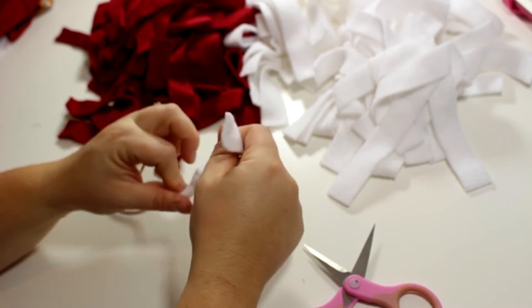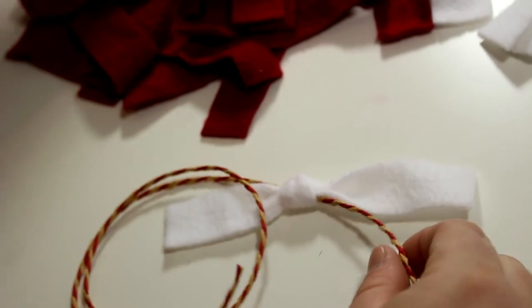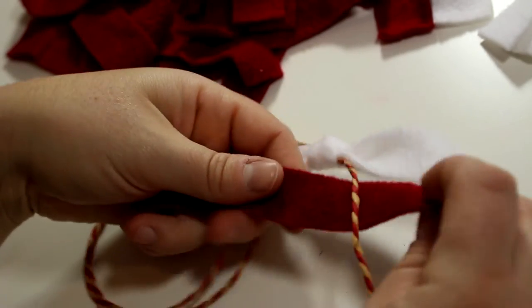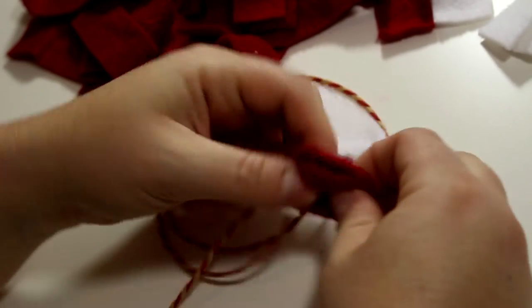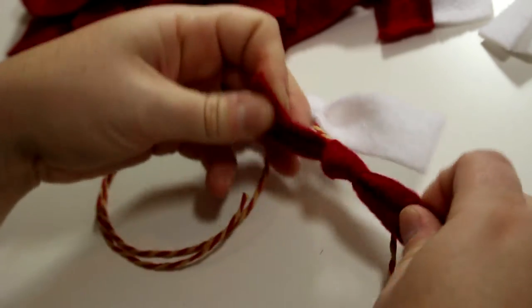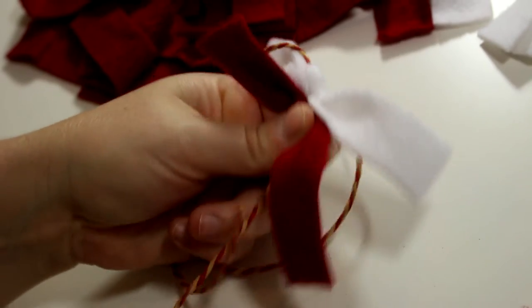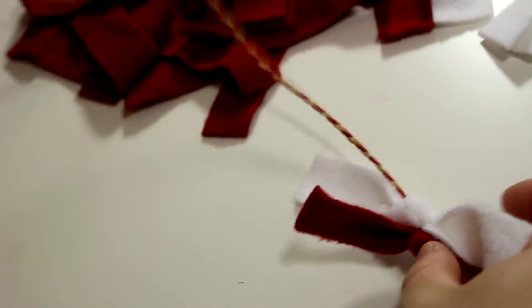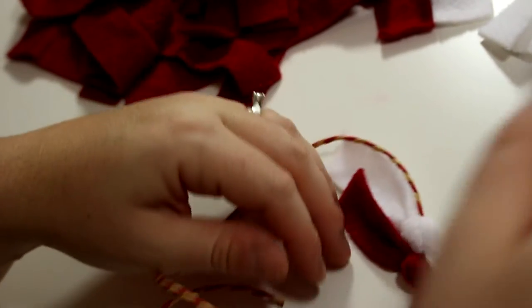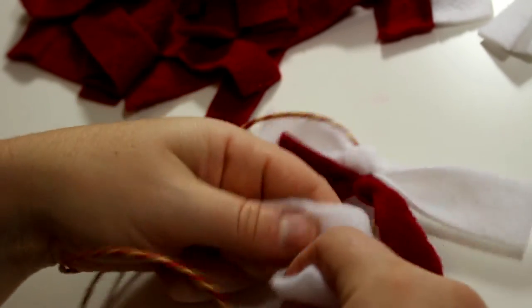So all you have to do is take your strips and just tie one single knot onto the string or whatever you're using. I'm going to go back and forth from the red to the white. As you're going you're just gonna pull them or push them down and keep them all nice and close together. And then that's pretty much it, so you just keep going.